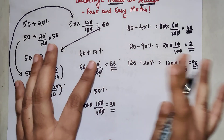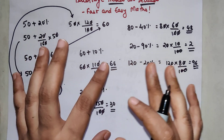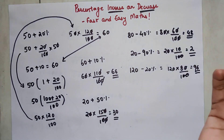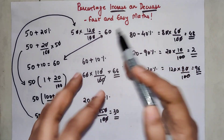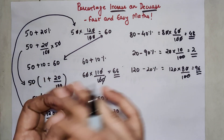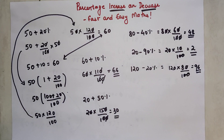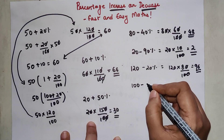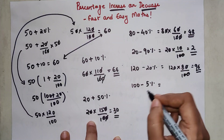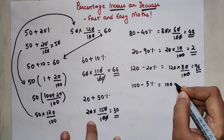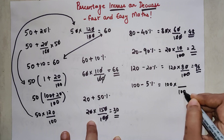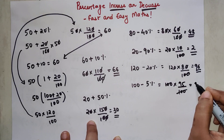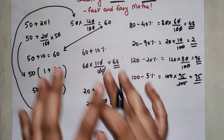To quickly revise: when increasing a percentage, we add the percentage to 100; when decreasing, we subtract the percentage from 100, then do the final calculation. For example, to decrease 100 by 5 percent: 100 into 95 upon 100 — the 100s cancel — so the final answer is simply 95.